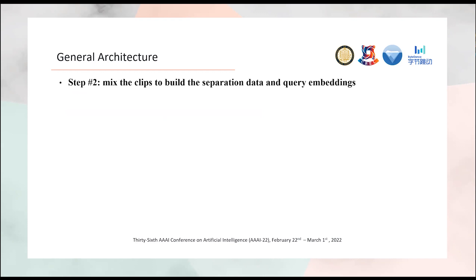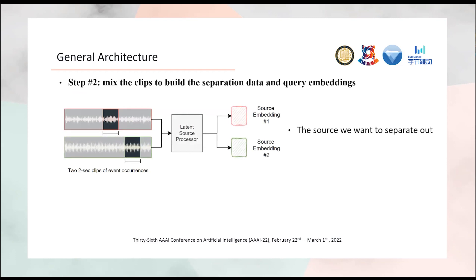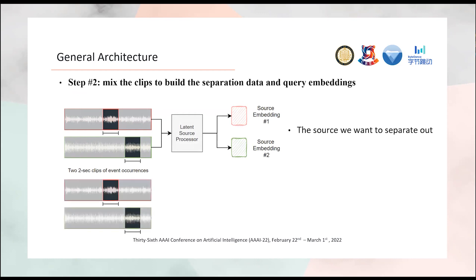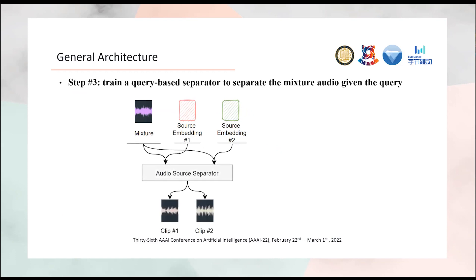After we get two audio clips, we use them in two ways. First, we send them into a latent source processor to get source embeddings from neural networks — this is the source we want to separate out. Second, we mix the two clips together as a mixture — this is the audio we want to separate from. Now we have the source embeddings and the mixture, and we can do the separation. Finally, we use the mixture and embedding 1 as a pair to train the model to separate clip 1, or with embedding 2 to separate clip 2. Each time, the model is fed with the mixture audio and a given source embedding, so it is a query-based separator.